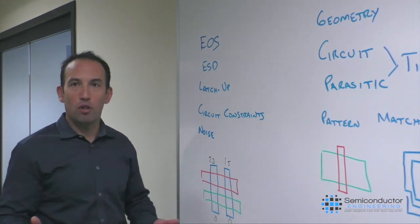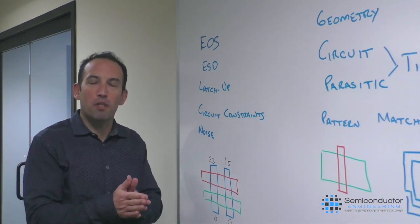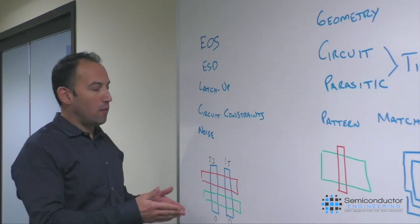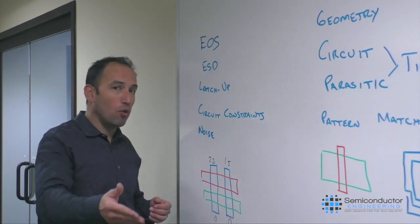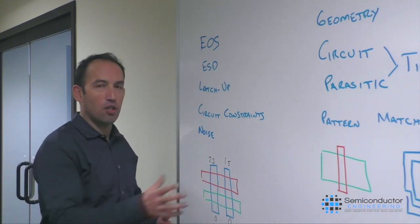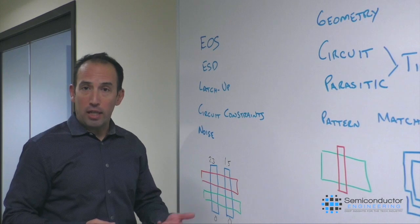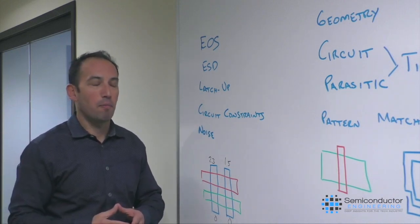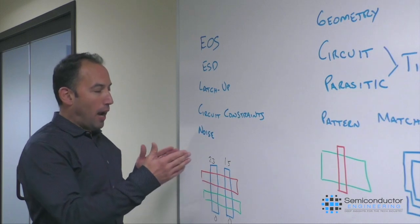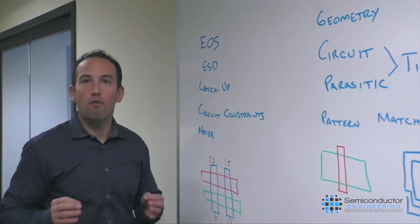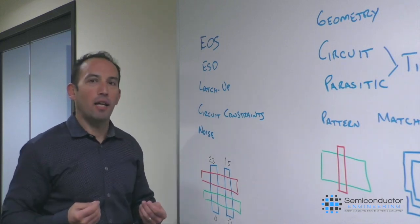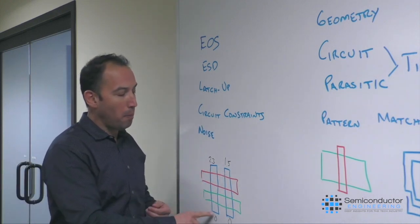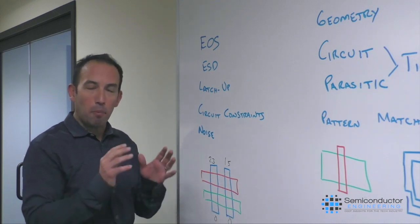A very good example is voltage-aware DRC. The concept being you have different spacing requirements based on the voltages that are present within the design. Now, traditional ways of doing voltage-aware DRC is to have you, the designer, put in marker layers or put in text annotations of what that voltage is. It's very tedious. It's very error-prone. And it's also very brute force if you say, okay, this entire region is 5 volts or 50 volts or something like that.